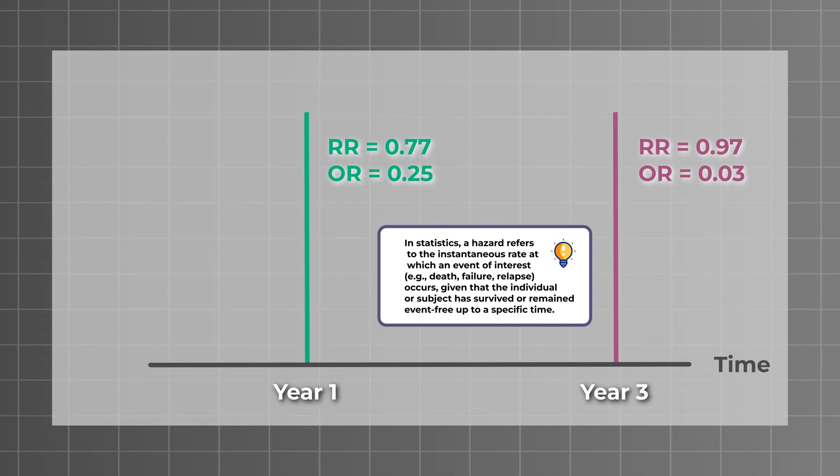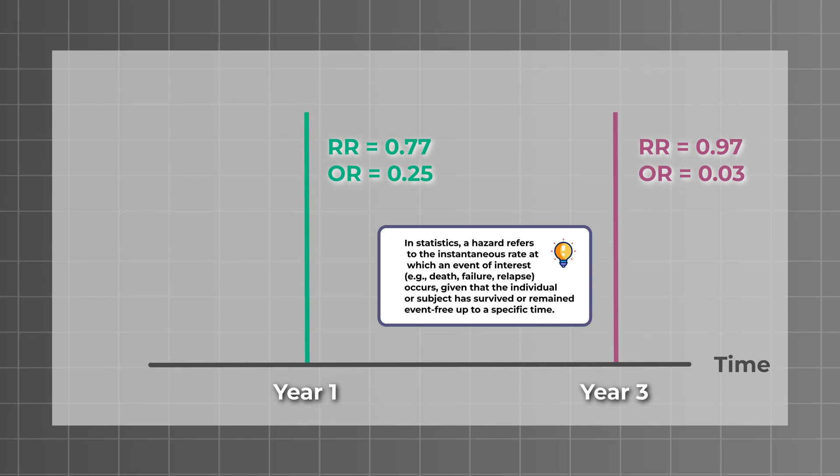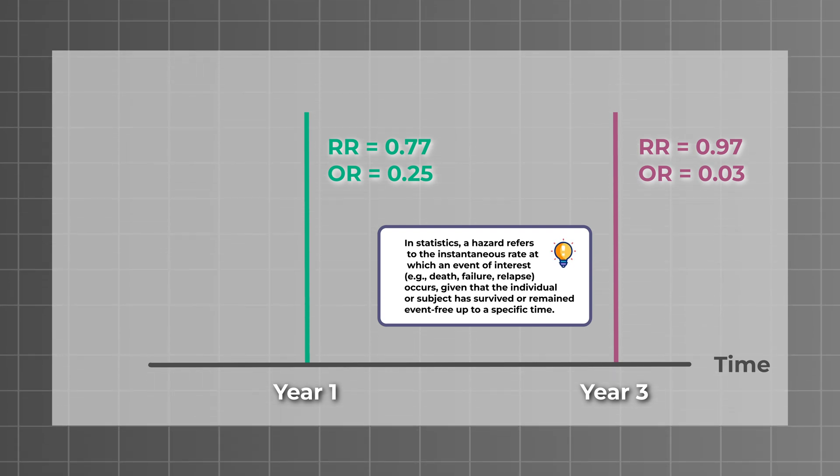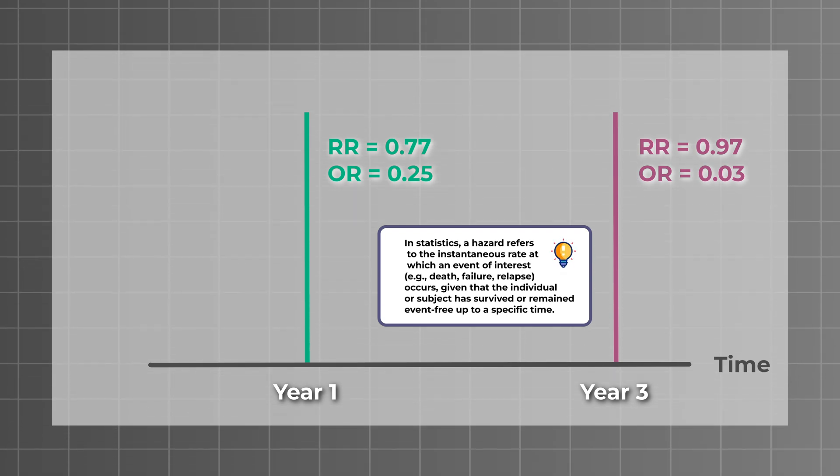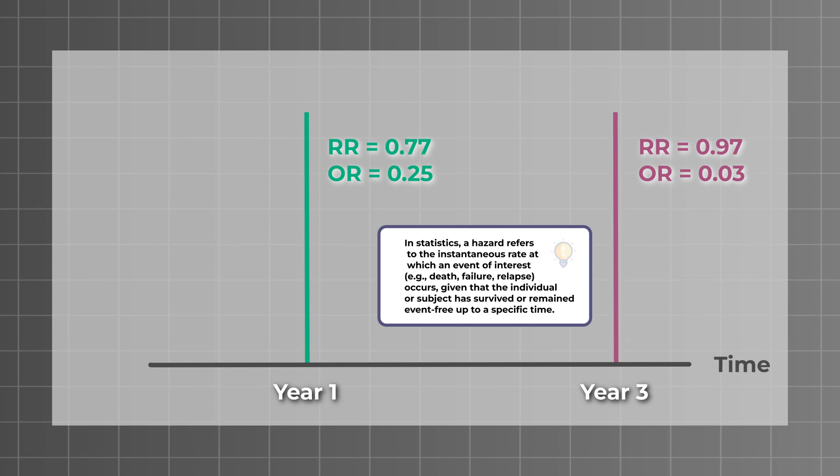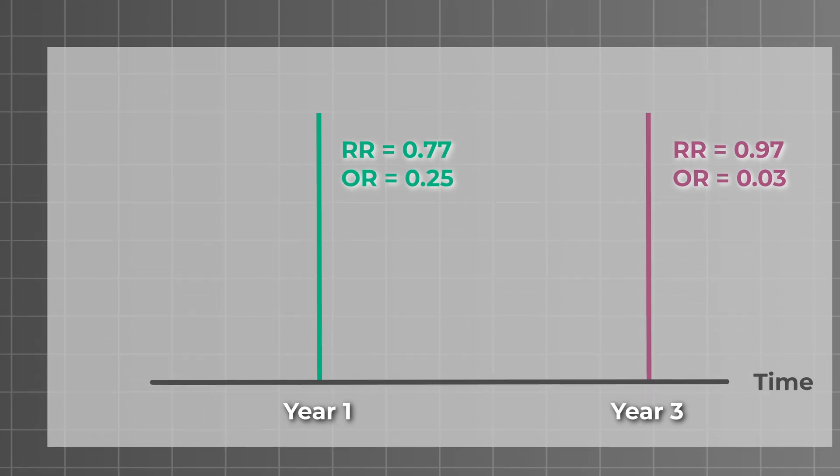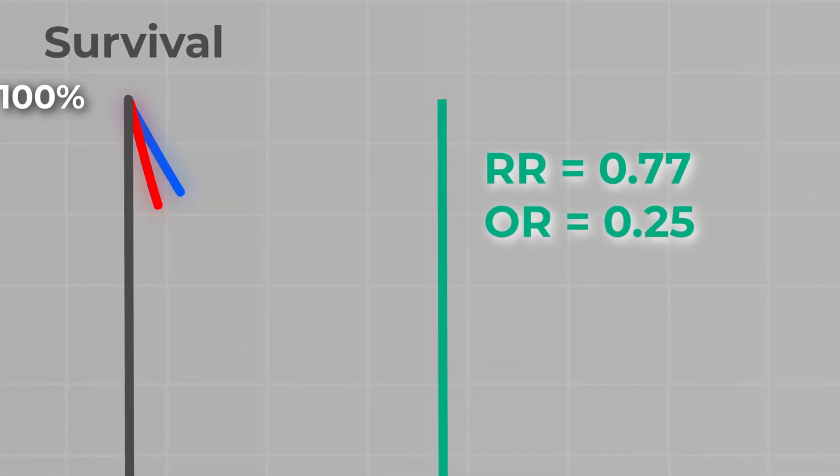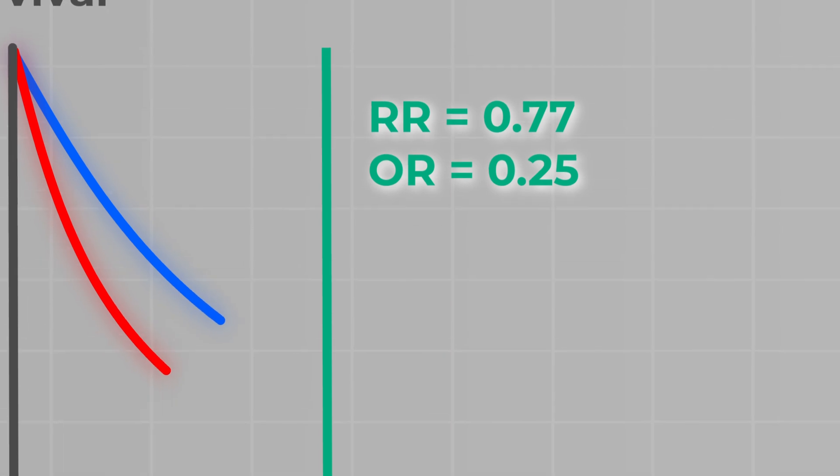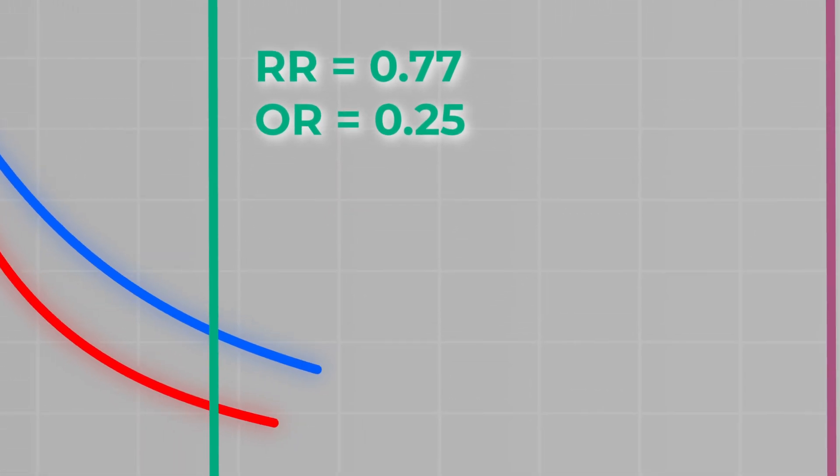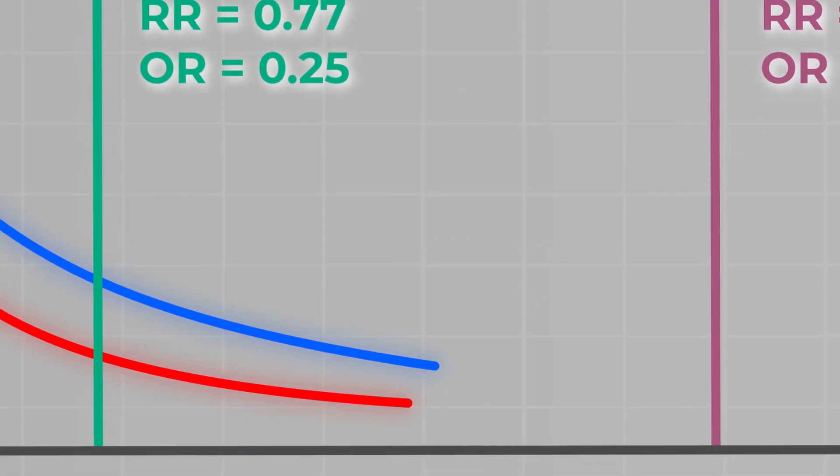In our case, the hazard is the rate of death per unit of time for patients in each treatment group, given that they have survived up until that time. That's why hazard ratios are in tandem with survivorship curves, which show the temporal progression of an event within a group, whereby the event in our example is death.